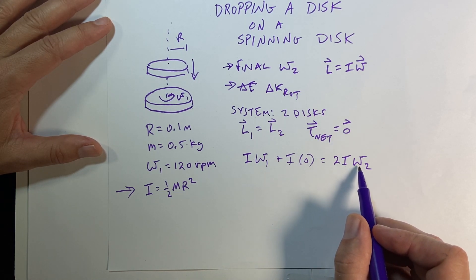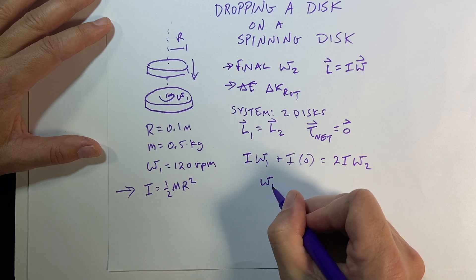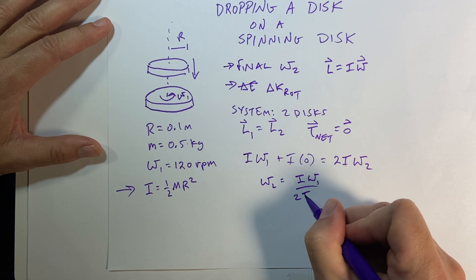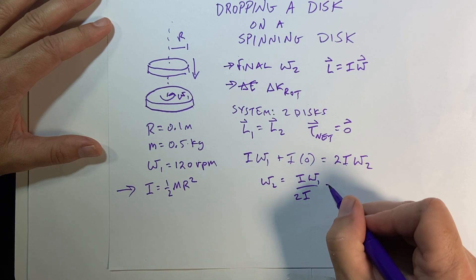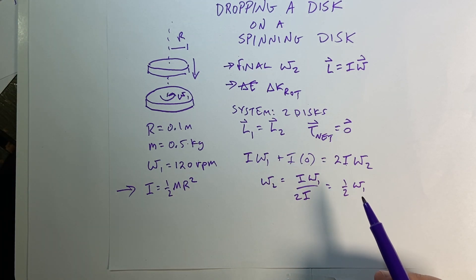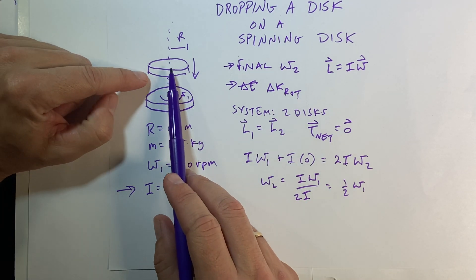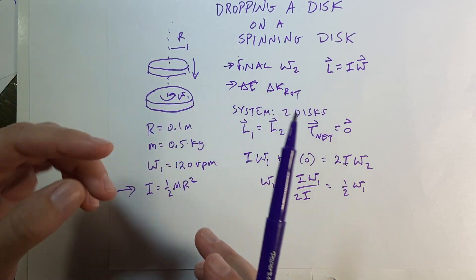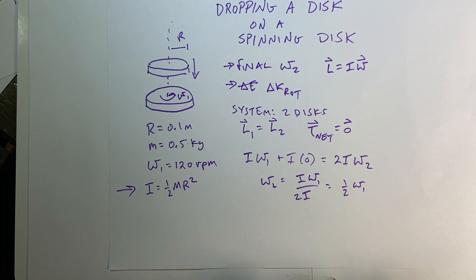So if I want to solve for omega-2, I get omega-2 equals I omega-1 over 2I, because I divide that by 2, and that just is one-half omega-1. So in this case, if I take these two discs, they're identical discs, and I drop them together, their final angular velocity will be half of the initial.